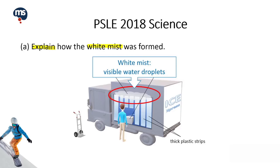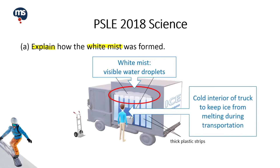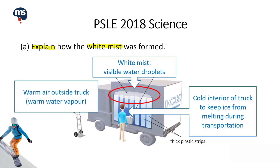The white mist are actually visible water droplets. Looking at the interior of the truck, it has a cold interior to keep ice from melting during transportation. The area outside the truck has warm air, which contains warm water vapour. When the warm water vapour came into contact with the colder air from the truck, the process of condensation would take place.